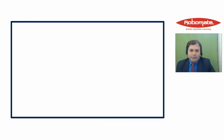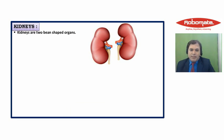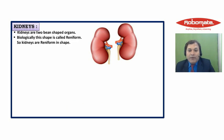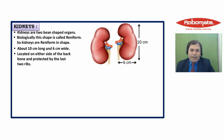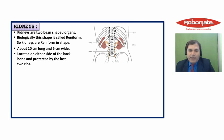Kidneys are two bean-shaped organs. Biologically, this shape is called reniform, so we say kidneys are reniform in shape. Both kidneys are about 10 centimeters in length and about 6 centimeters wide. The kidneys are located on either side of the backbone and are protected by the last two ribs — one kidney on the right side and another on the left side of the backbone.